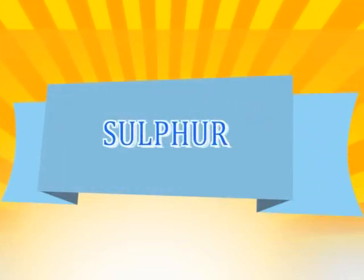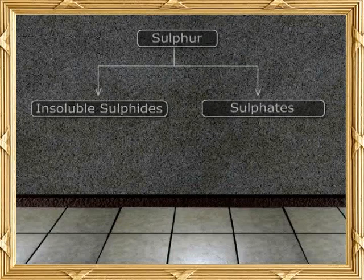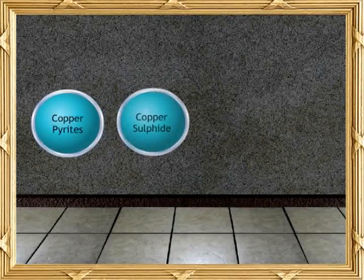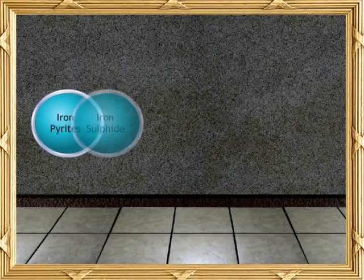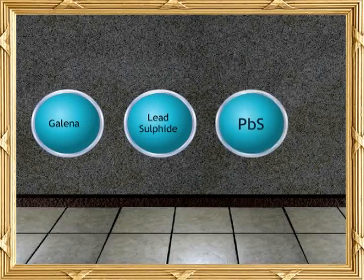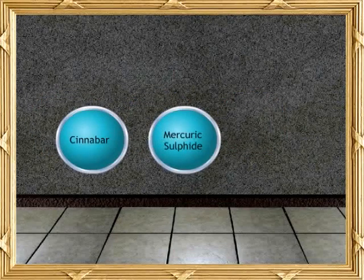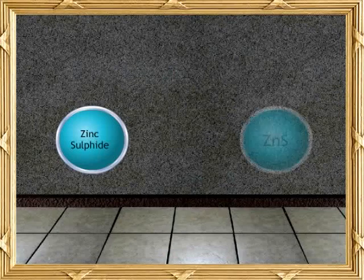Where does sulfur exist? Sulfur is found in nature as insoluble sulfides and sulfates. Some examples are: copper pyrites, which contain copper sulfide (CuS); iron pyrites, which have iron sulfide (FeS₂); galena, which has lead sulfide (PbS); cinnabar, which has mercuric sulfide (HgS); and zinc sulfide (ZnS).